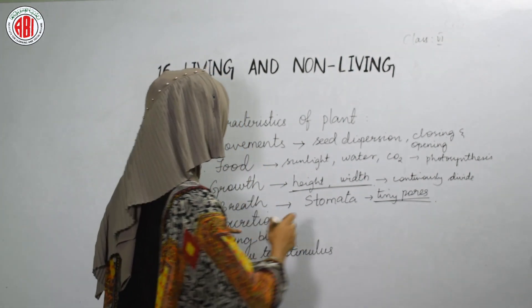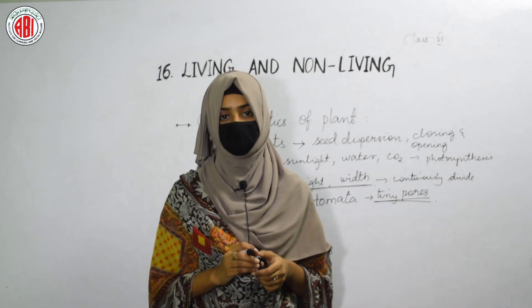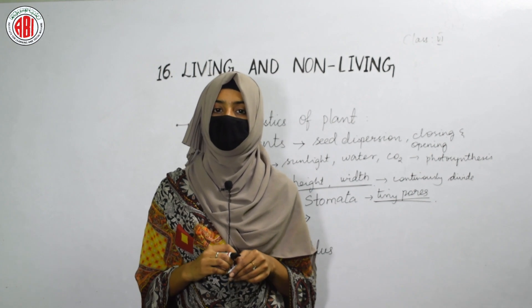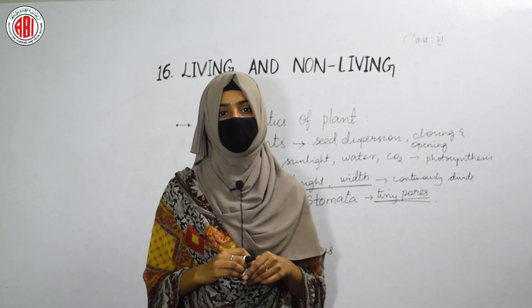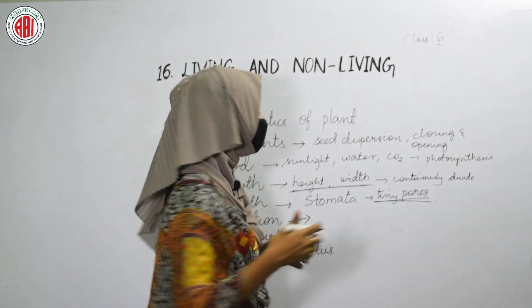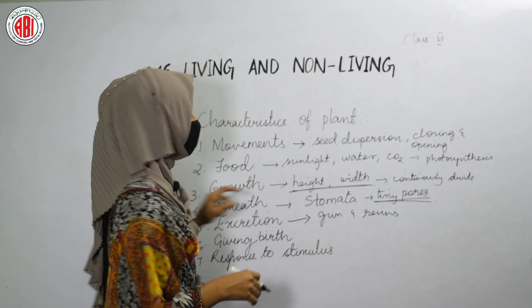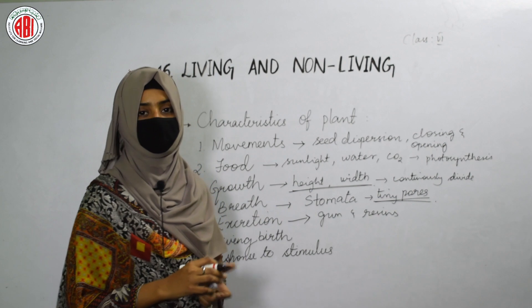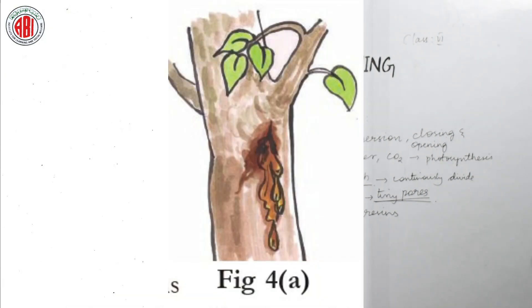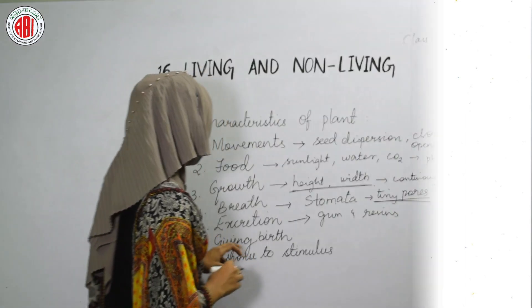The next characteristic is excretion. Excretion takes place in plants as well. Plants excrete out waste material in the form of gum and resins. So excretion is a process that takes place in plants, and they excrete the material in the form of gum and resins.